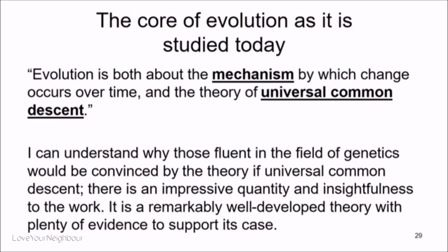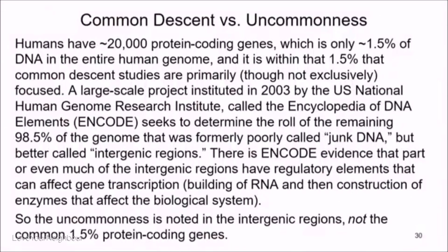The universal common descent theory is a very advanced theory and it has a lot going for it — it is an amazing theory. Humans have about 20,000 protein-coding genes. That means that within the DNA, there are about 20,000 segments that make these proteins, which are the little nanomachines that build us.